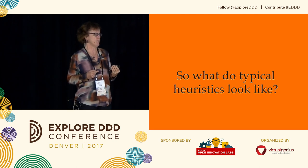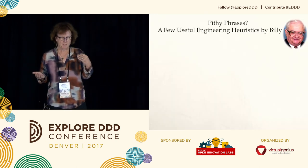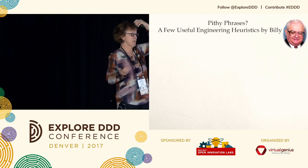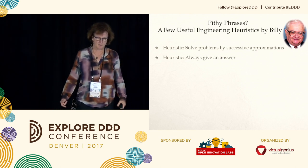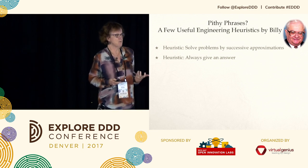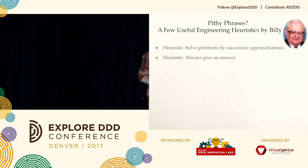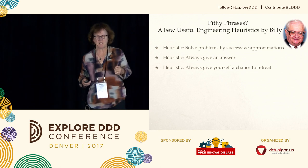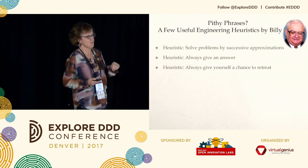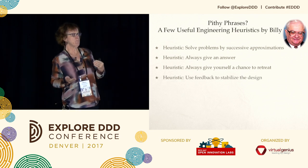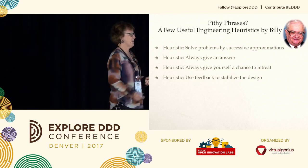One of the questions to ask yourself about heuristics is what do they look like? Are they pithy phrases? Here are some heuristics from Von Kohn's philosophy book: solve problems by successive approximations; always give an answer — use the best mechanism you know right now, don't overwork it; always give yourself a chance to retreat if you need to back up and try again; use feedback to stabilize your design rather than design-design-design then build; and break things down into small pieces.